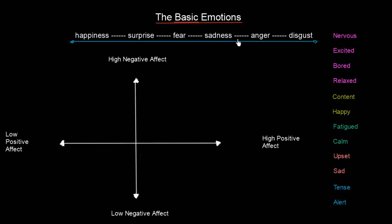Another thing about this continuum: some of these emotions can be misunderstood or misplaced. The closer two emotions are on the continuum, the more likely you are to confuse them. For example, you might be happy but confuse your mood with being surprised. But when two emotions are very far from each other — like happiness and anger — you are very unlikely to confuse those two.